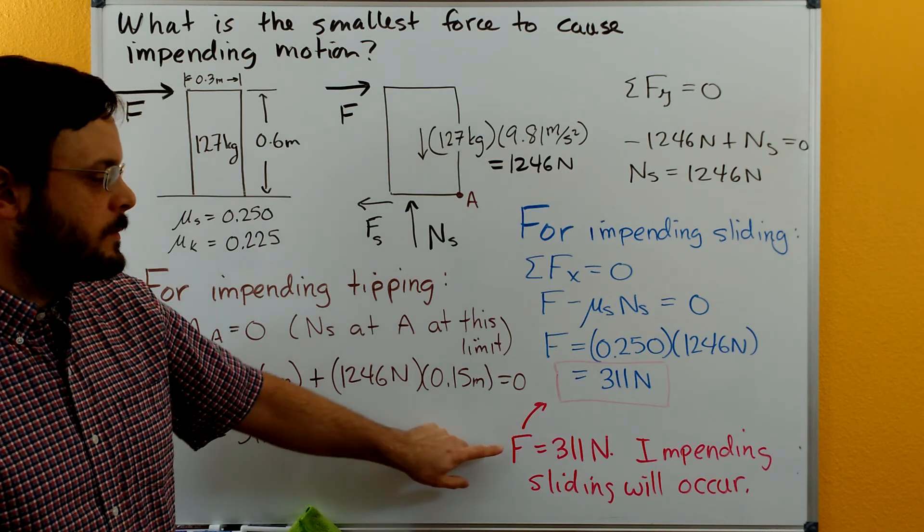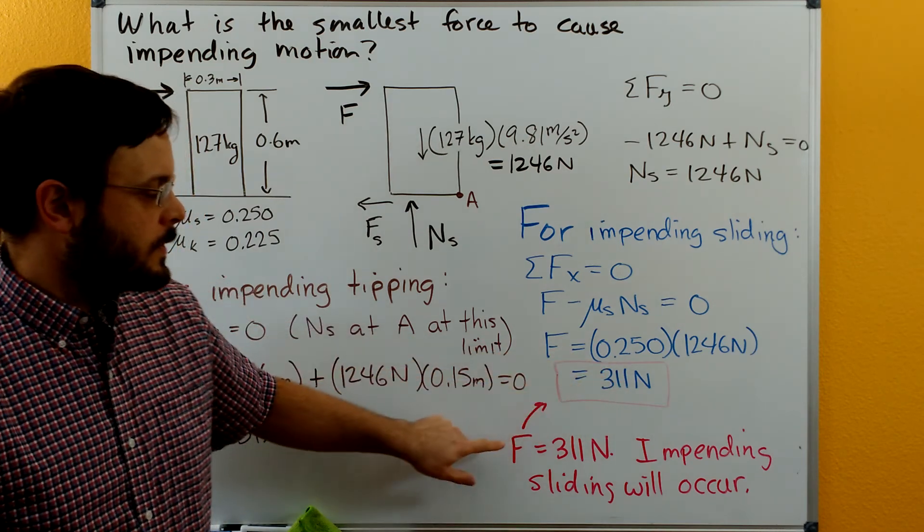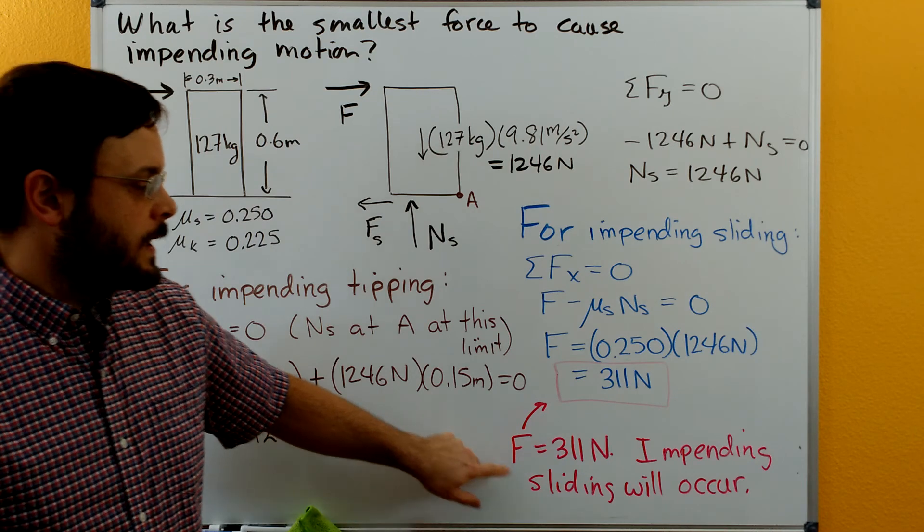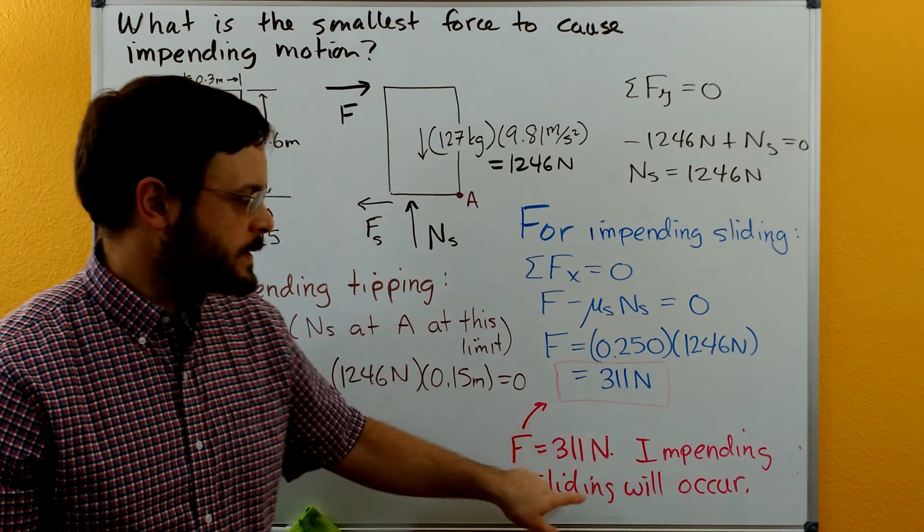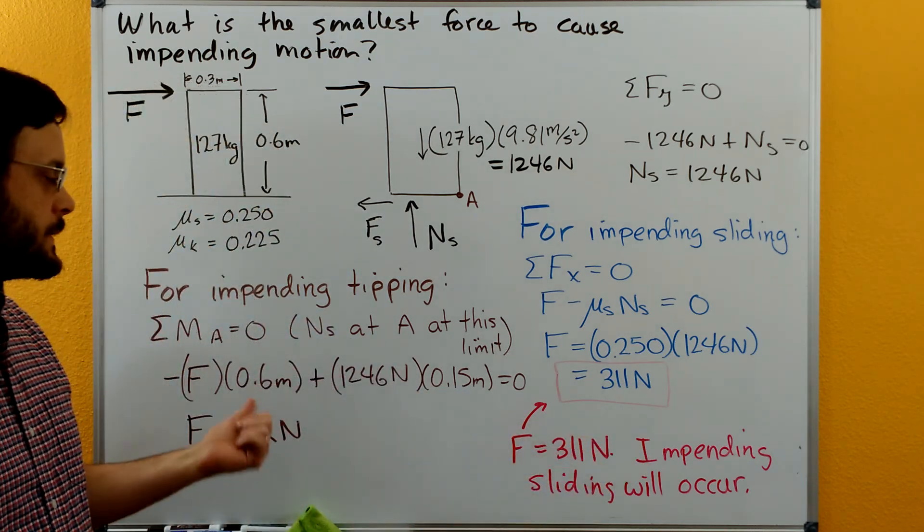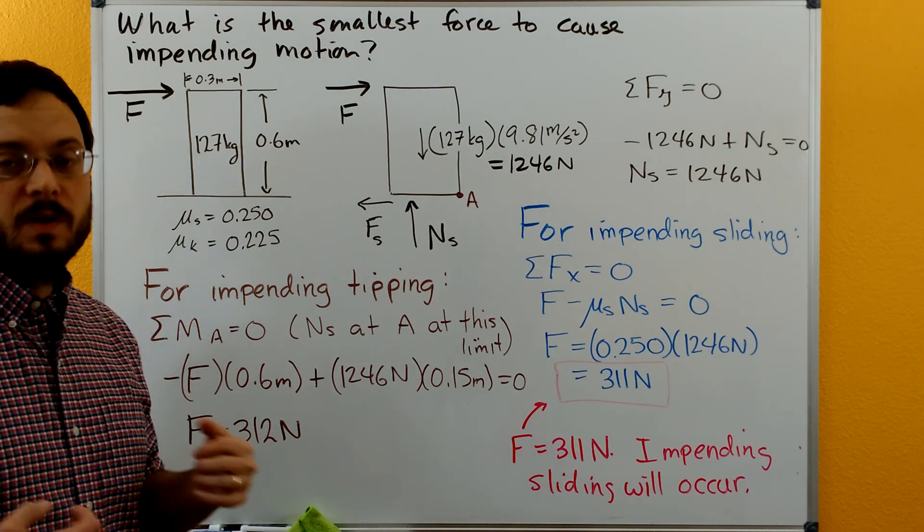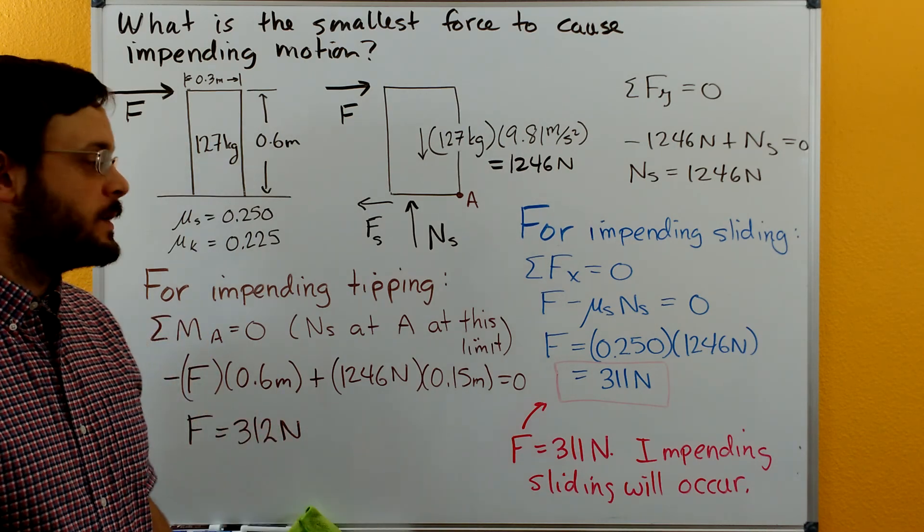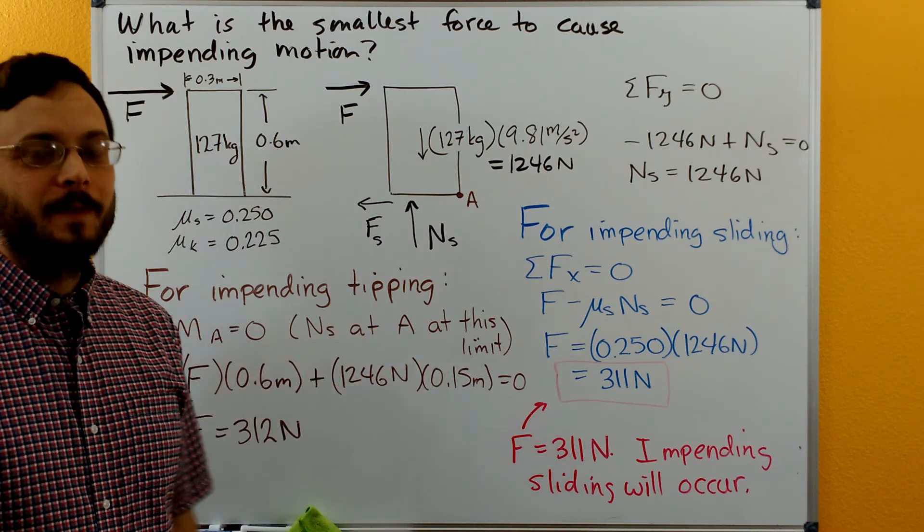So if this was on an exam we would mark this number, we would say F is equal to 311 newtons, and we'd make sure that we said impending sliding will occur so that we convey that we've identified which of the two cases. Thanks for watching!